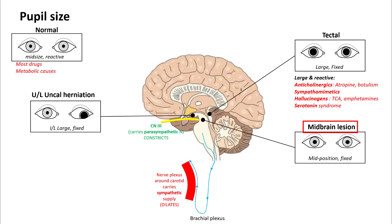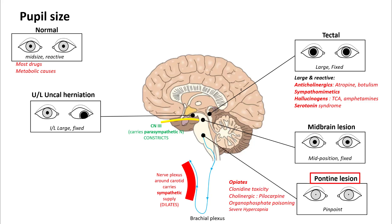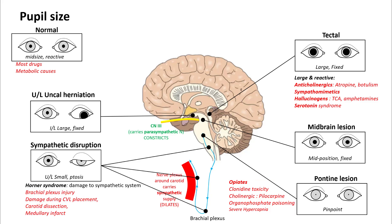Midbrain lesions will have mid-position and fixed pupils. Pontine lesions will have pinpoint pupils. Pinpoint pupils can also be seen in opiate toxicity. Other reasons for pinpoint pupils include use of cholinergic eye drops, cholinergic toxicity, organophosphate poisoning, clonidine toxicity, and severe hypercapnia. Any disruption to the sympathetic supply to the eye will result in unilateral small pupils with associated ptosis — this is Horner's syndrome. You can see it in brachial plexus nerve injury, damage to the nerve plexus around the carotid arteries during central line placement, carotid dissection, and medullary infarcts.